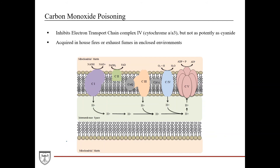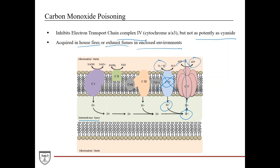Carbon monoxide affects both the electron transport chain and hemoglobin's capacity to carry oxygen. For the electron transport chain, it inhibits Complex 4, same as cyanide, but not as potently. Complex 4 contributes to pumping hydrogen into the intermembrane space of the mitochondria, creating the hydrogen gradient that powers ATP synthase to give you ATP. By inhibiting Complex 4, not only do you decrease this hydrogen gradient, you also inhibit its ability to utilize oxygen as the final electron acceptor in the electron transport chain. Exposure can occur with house fires, exhaust fumes, or gas leaks in enclosed environments.